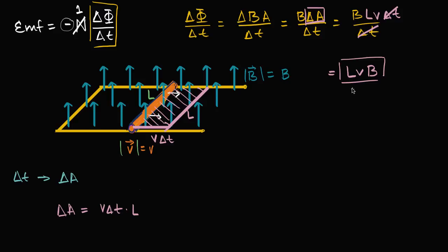You could ask: what direction is the current going to actually flow in? Well, the magnetic field isn't changing, but since the area is increasing, the flux is increasing in the upward direction. If the current went one way, I take my right hand and put my thumb in that direction — if I loop my fingers around, this would induce a magnetic field that goes in the same direction as the change in flux. That would actually enhance the flux, which would violate the law of conservation of energy.